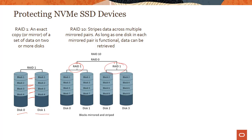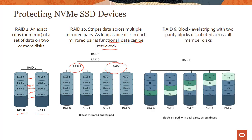RAID 10 is a combination of two RAID 1 pairs. As long as one disk in each mirrored pair is functional, data can still be retrieved, providing extra protection. RAID 6 uses block-level striping with two parity blocks distributed across all member disks. It is more complex and incurs a performance hit, but provides extra durability. Depending on your use case, you can choose RAID 1, RAID 10, or RAID 6.